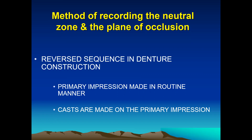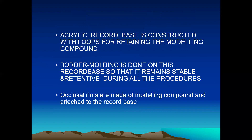For recording the neutral zone we have to follow the reversed sequence in denture construction. First we have to take the primary impression in the routine manner, then pour the cast from the primary impression. Then an acrylic record base is constructed with retentive loops — these loops are meant for retaining the modeling compound. Then we have to do border molding on this record base so that it remains stable and retentive during all the procedures.